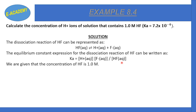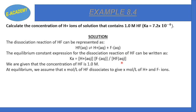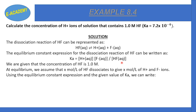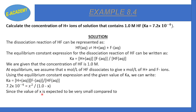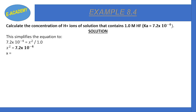Ka value is given and HF molarity is given as 1.0 molar. At equilibrium, assuming HF dissociates to give X moles each of H⁺ and F⁻, we write: 7.2 × 10⁻⁴ = X² / (1.0 − X). Solving this equation, X = 0.0268 molar. Therefore, [H⁺] = 0.0268 molar.